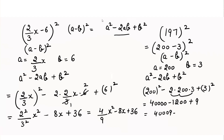So 40,000 minus 1200 plus 9 gives us 38,809. This is how you can use different algebraic identities to solve such mathematical questions.